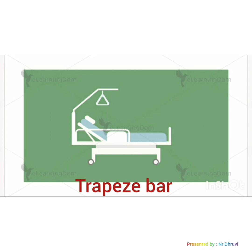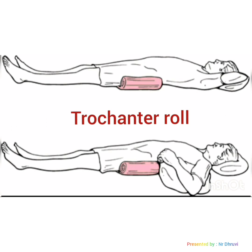The next device is the trochanter roll. It can be made of thick cotton blankets or a towel. A cotton bath blanket is folded lengthwise to a width extending from the greater trochanter of the femur to the lower border of the popliteal space. It is used to prevent external rotation of the legs when the patient is in the supine position.